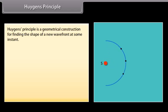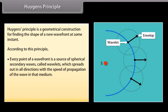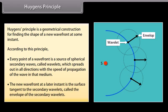Huygens' Principle is a geometrical construction for finding the shape of a new wave front at some instant. According to this principle, every point of a wave front is a source of spherical secondary waves called wavelets, which spread out in all directions with the speed of propagation of the wave in that medium. The new wave front at a later instant is the surface tangent to the secondary wavelets, called the envelope of the secondary wavelets.